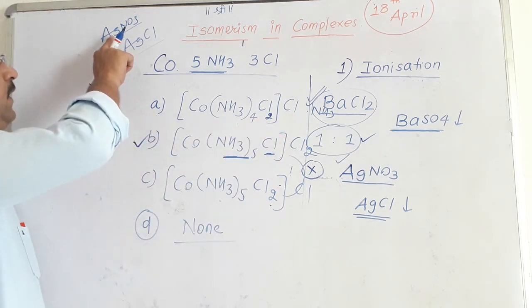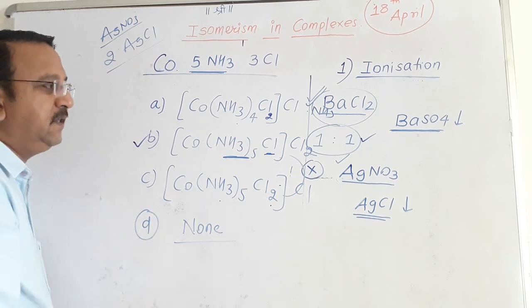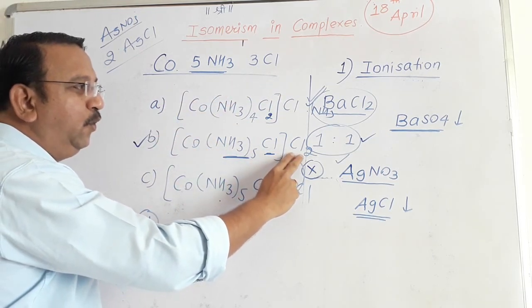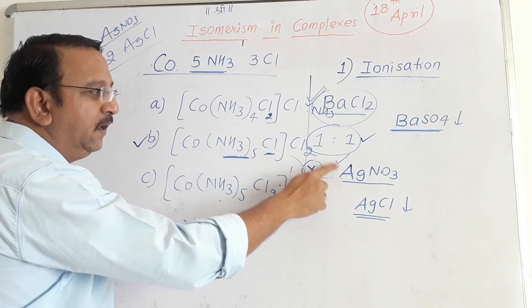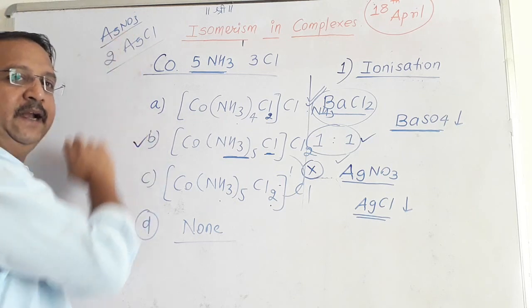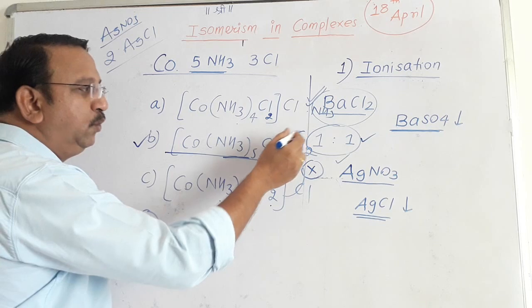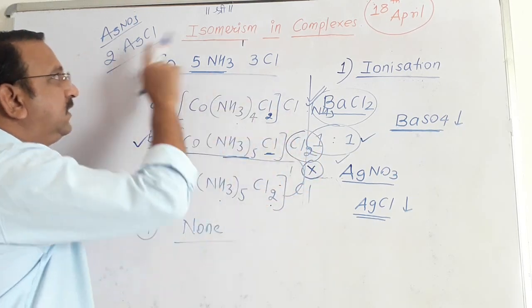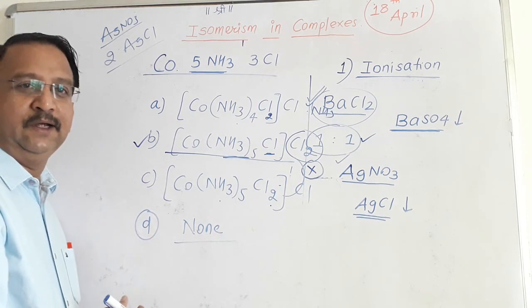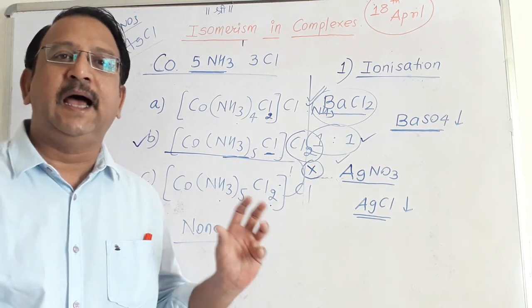2 moles of AgCl means if you take the complex and add it in water, you should get 2 chloride ions, because AgNO3 reacts with chloride ions in 1-to-1 proportion. So suppose 2 moles are given, that means we need 2 chloride ions outside, so naturally our answer is this one. So 2 chlorides means 2 moles, 3 chlorides means 3 moles, 1 chloride means 1 mole, and 0 chloride means 0 mole. So this is the answer for this particular compound. I hope you understood this ionization isomerism.